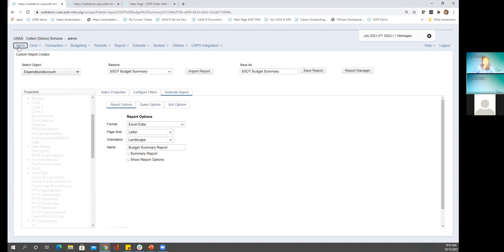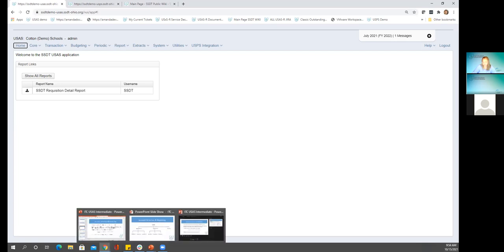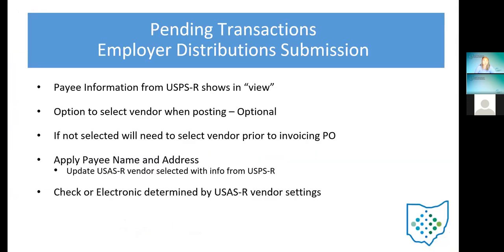Switching gears to talk about pending transactions. This is where information comes over from the payroll side from USPS-R. They'll post transactions related to payroll: employer distribution, employer retirement share. From that side, they can generate files to send to USAS, giving the USAS side a way to review and then add that data to the USAS totals. When posting employer distribution or employer retirement — your classic board dist or board ret — those files would go to a PO once posted from the pending transactions. The payroll file goes directly to a disbursement, so you want to be careful about the date being used.